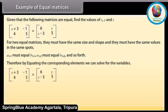Therefore, by equating the corresponding elements, we can solve for the variables: x plus 3 equals 6, so x equals 3; y equals minus 1; z minus 3 equals 4, so z equals 7.